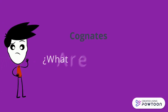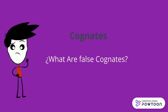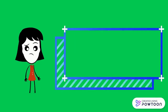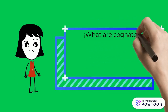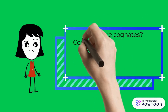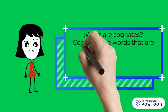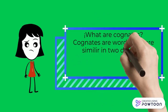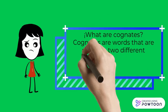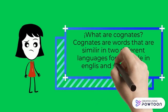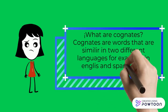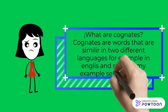Cognates. What are false cognates? Cognates are words that are similar in two different languages. For example, in English and Spanish — for example, 'services' and 'servicios.'